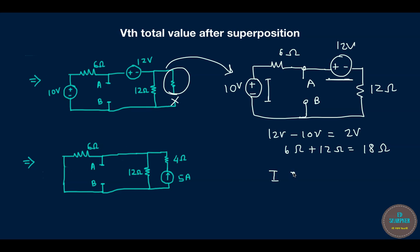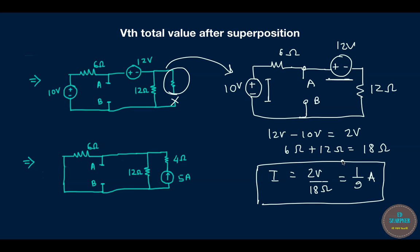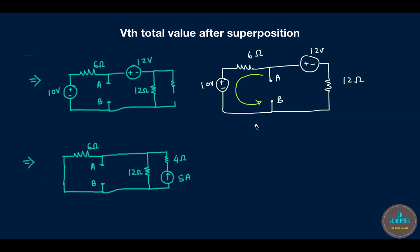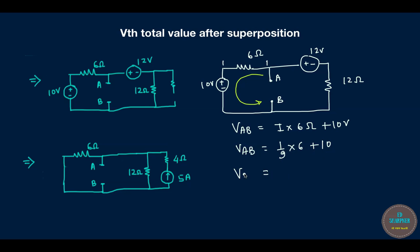The current through the circuit flows counterclockwise since the 12 V battery dominates. The current is 2 V ÷ 18 Ω = 1/9 A. Applying KVL around the left loop, Vab equals the voltage across 6 Ω plus 10 V, so Vab1 = (1/9) × 6 + 10 = 6/9 + 10 = 32/3 V.